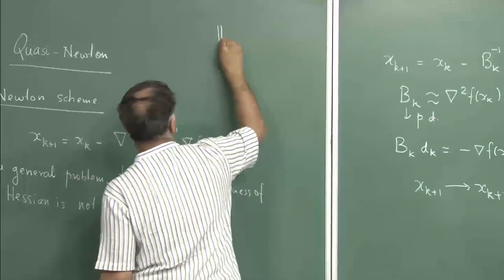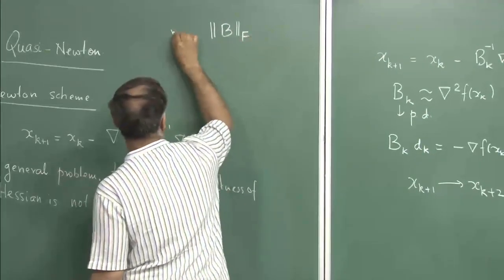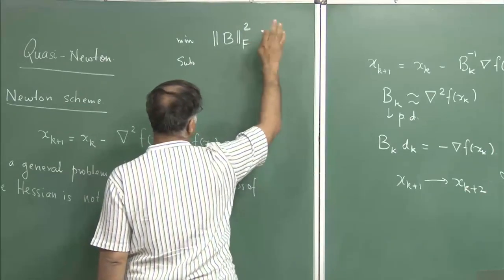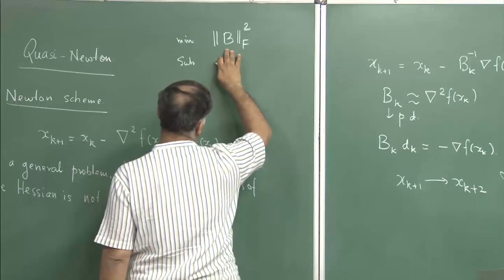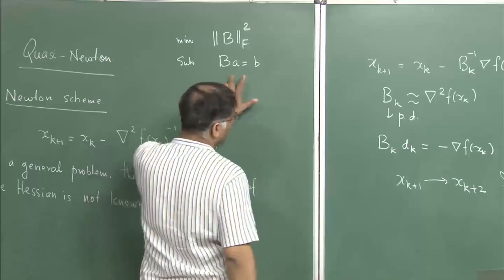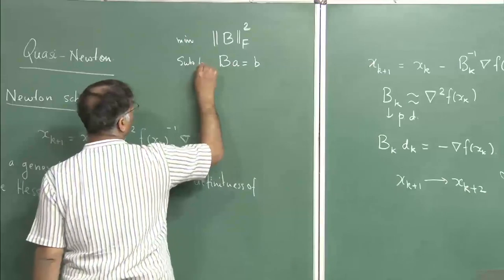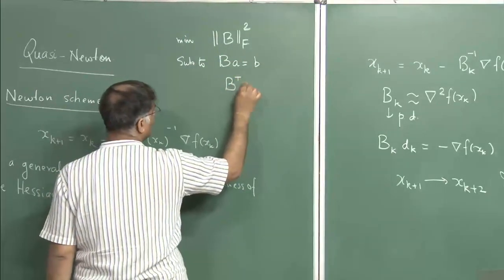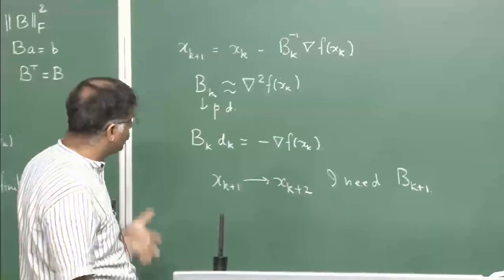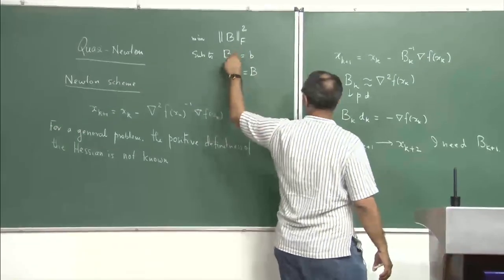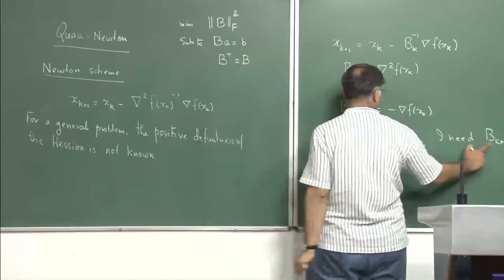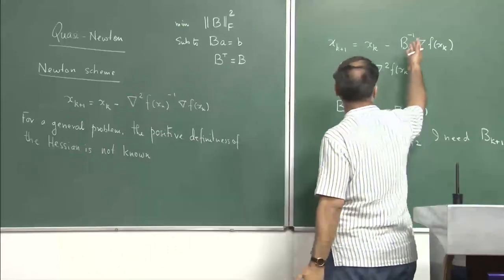Basically, I want to find a matrix B that minimizes its Frobenius norm squared, subject to the constraint B·a equals b, where a and b are fixed as d_k and minus grad f(x_k), and also subject to B being symmetric (B transpose equals B). So I want the new matrix B_{k+1} which is not very different from B_k — essentially minimizing the difference between B_k and B_{k+1}.